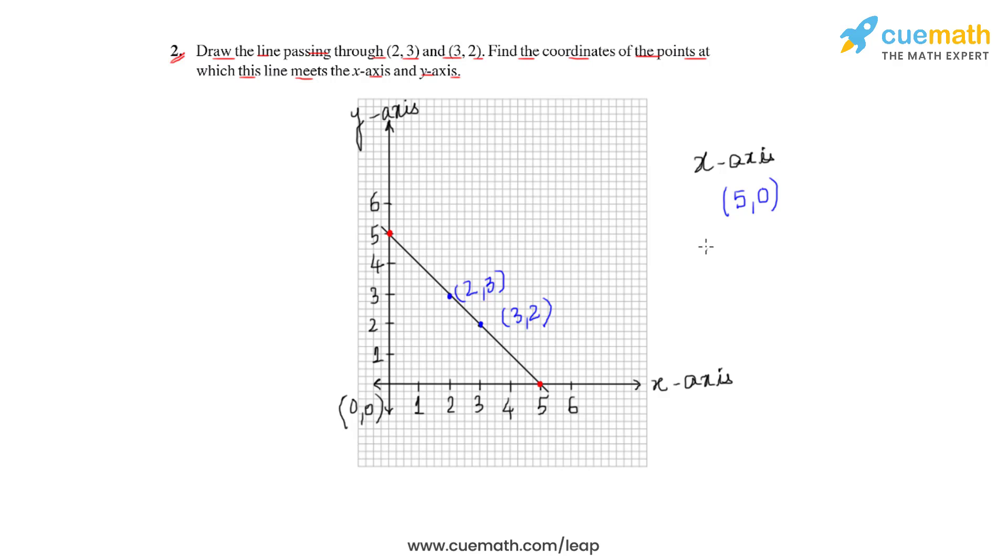Similarly, on the y-axis, this line intersects at the point (0,5). Since it is a point on the y-axis, the value of x would be zero.